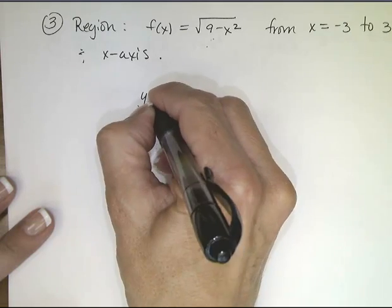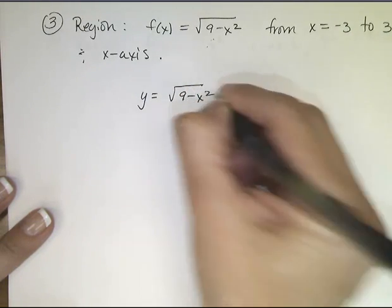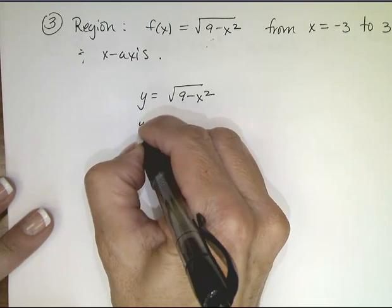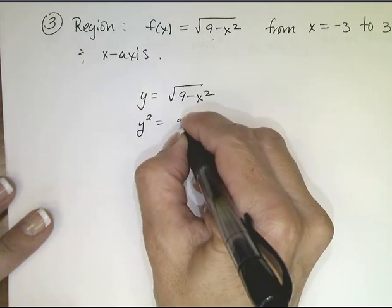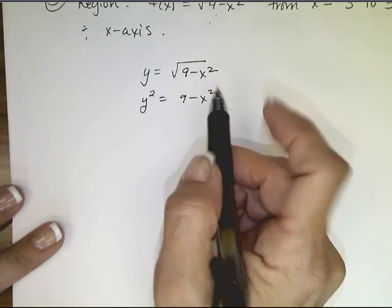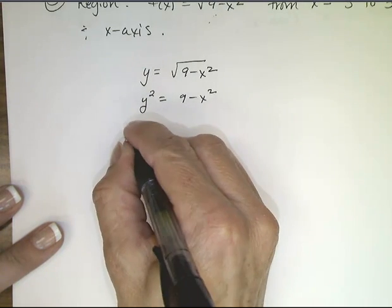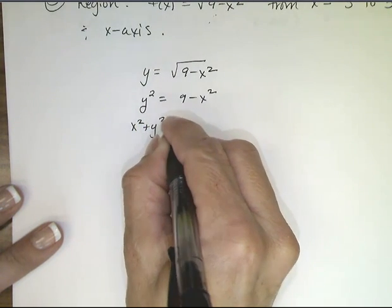So do you remember what this looks like? I'm going to rewrite this as y equals the square root of 9 minus x squared. I'm going to square both sides. y squared equals 9 minus x squared. And then I'm going to move this over. x squared plus y squared equals 9.